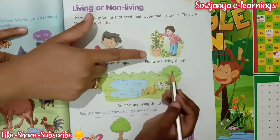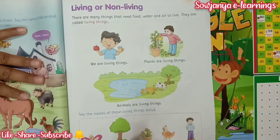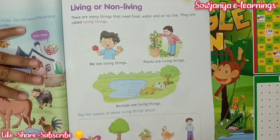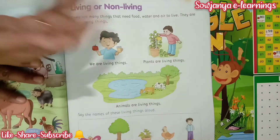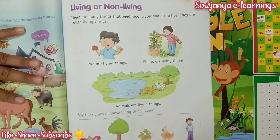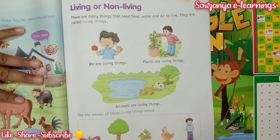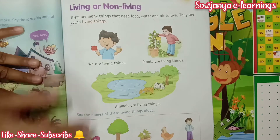Plants are also living things. Why? Because plants need sunlight and they will take water to grow also. So that's why plants are also living things.